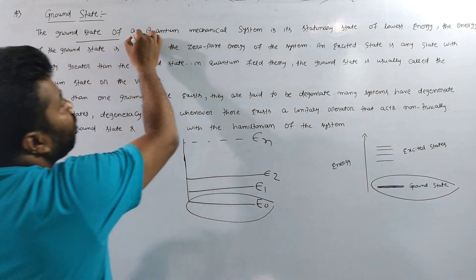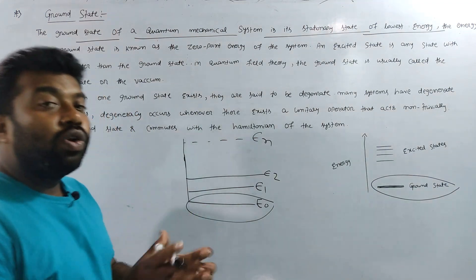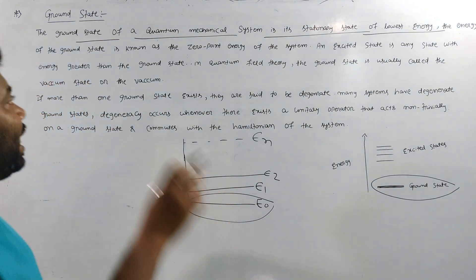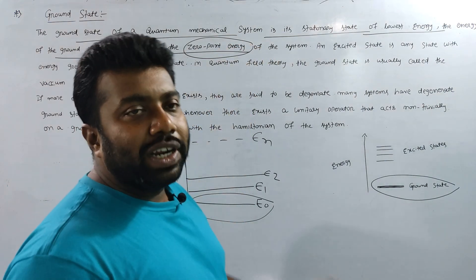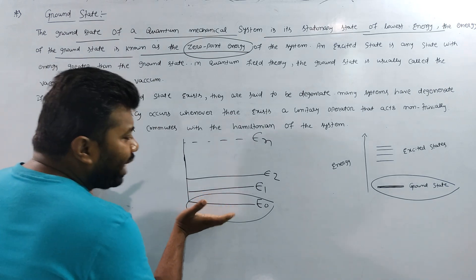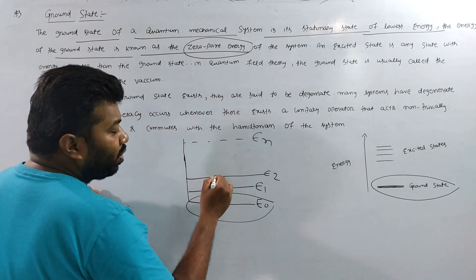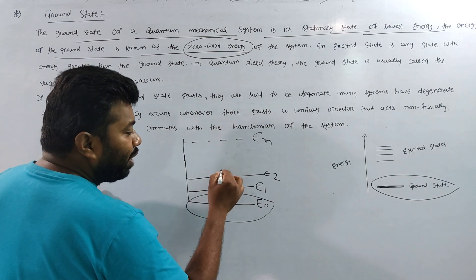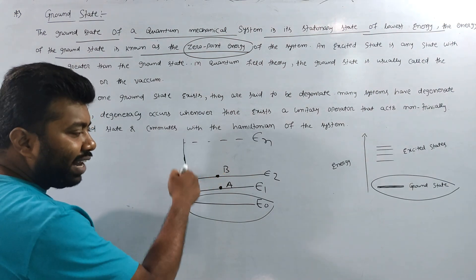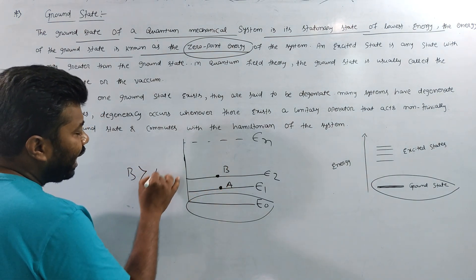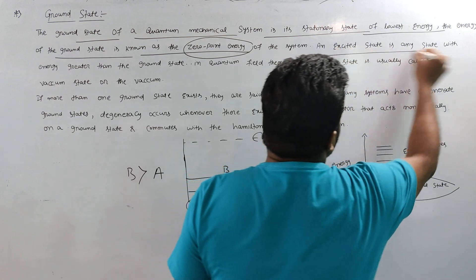The ground state of a quantum mechanics system is the stationary state of the lowest energy. The energy of the ground state is known as zero point energy. The energy level is lower for the ground state, and higher energy levels such as E1 and above are higher states.